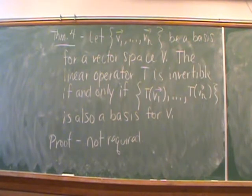This next theorem is also a useful one to know. It says that if T is a linear operator, it's going to be invertible if and only if a basis gets sent to a basis. So the idea is if you know a basis for a vector space V and we send that basis through a linear operator and we end up with a basis for V, T has to be invertible by this theorem.